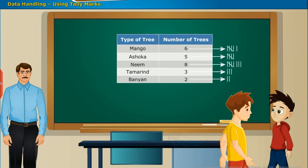His friend represented marks in terms of vertical lines for less than 5 and for more than 5 in number. He drew the first 4 vertical lines and the 5th one diagonally across the previous 4 lines, and the remaining as the previous values.